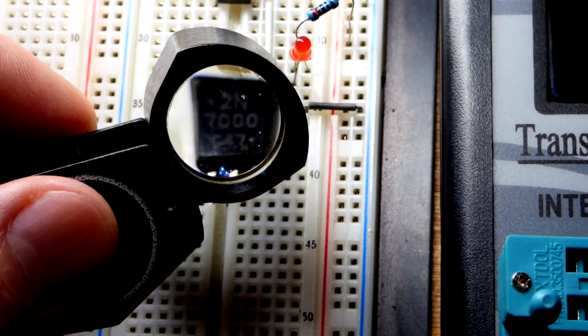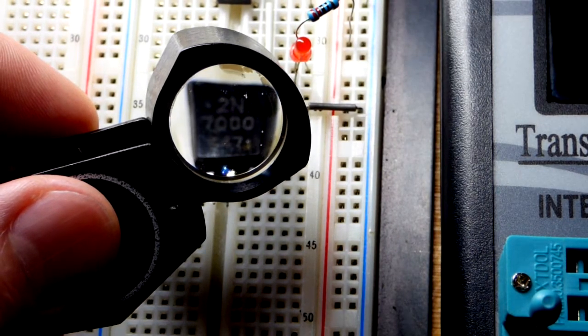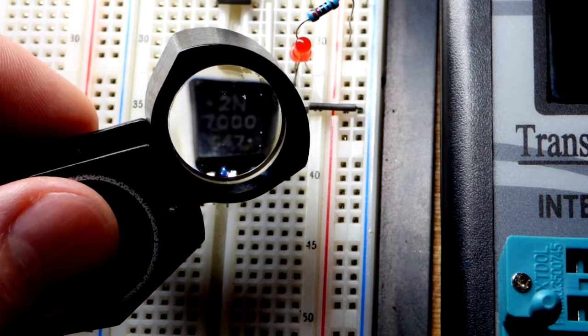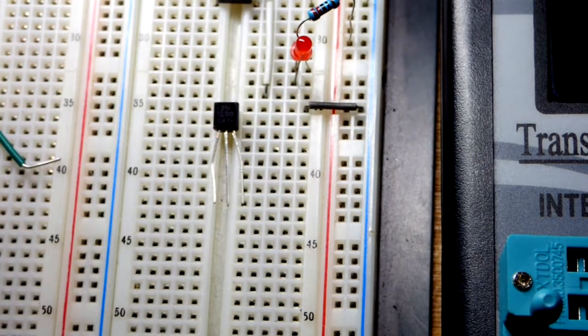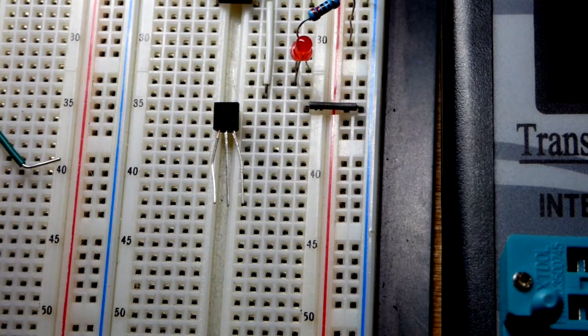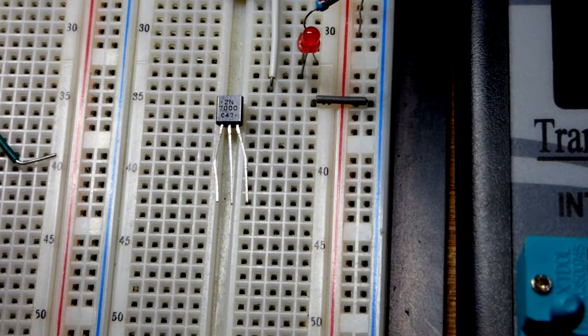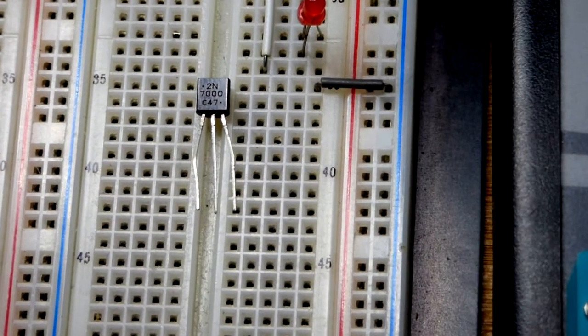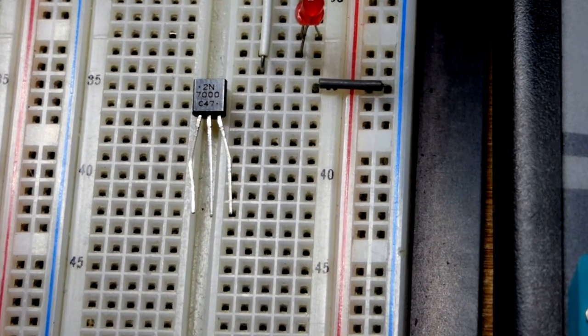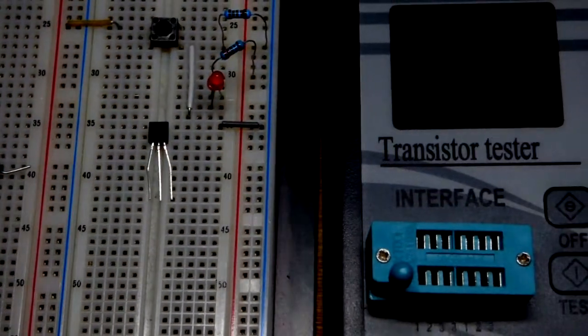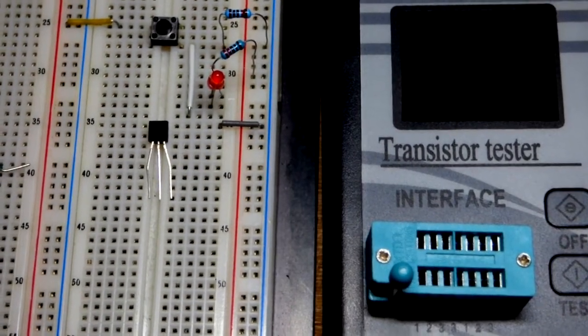So now in this video we're going to look at the N-channel enhancement mode MOSFET, most specifically here the 2N7000. It helps to get the lighting right on it to read it. We may be able to read it when I get the light like that. I can get a little closer, so there we go, 2N7000.